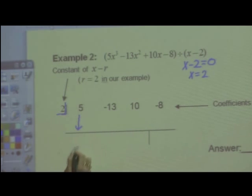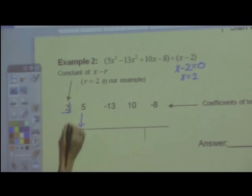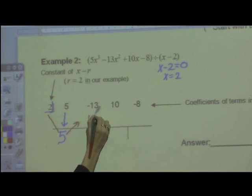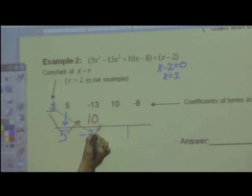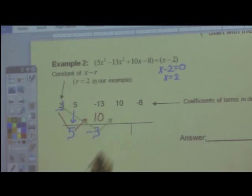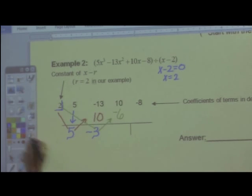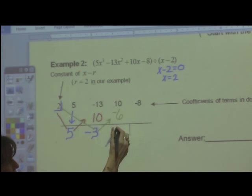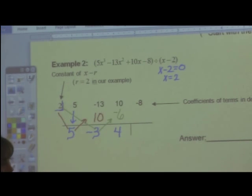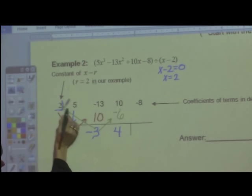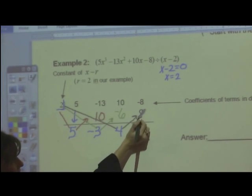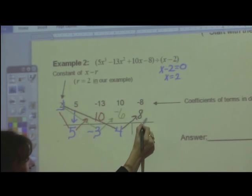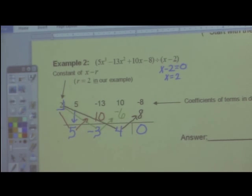And then I just start the process. The process for synthetic division, the five drops down. You never change it. And then it's like a backward check mark. Two times five is ten. Signs are different. So you subtract, keep the sign of the bigger number. Go to the next thing. Two times negative three, that gives me a negative six. Again, the signs are different, positive and negative. So you're going to subtract, keep the sign of the bigger number. One more time, I am going to do my backward check mark. Two times four is eight. I notice that the signs are different. So that means I will subtract and I'll end up with a zero.